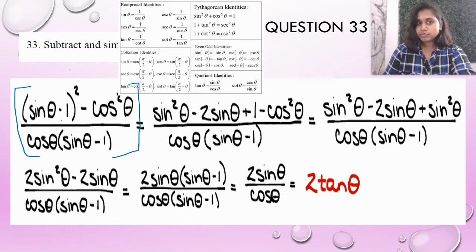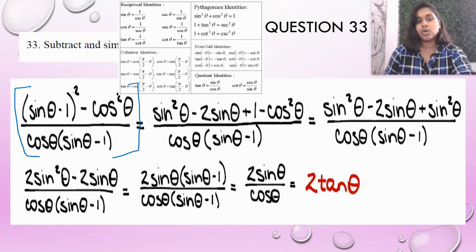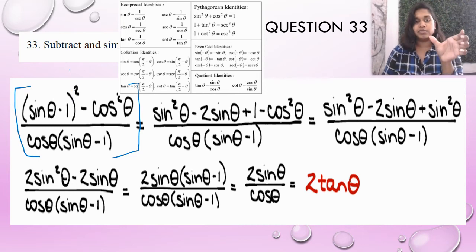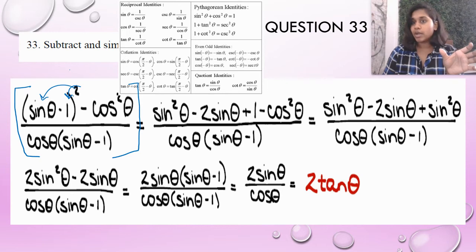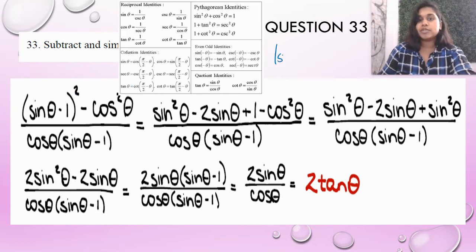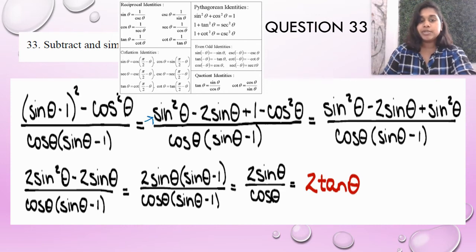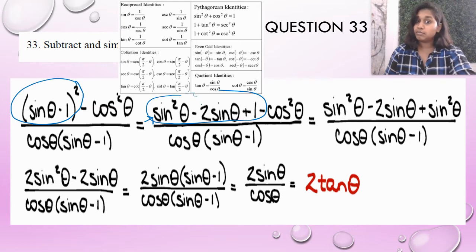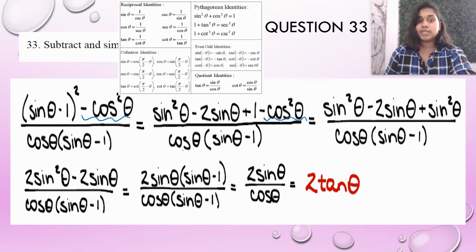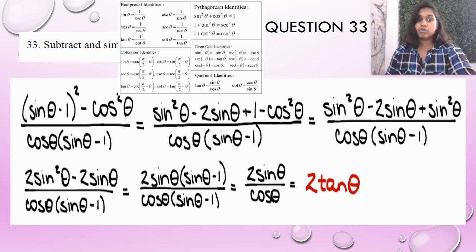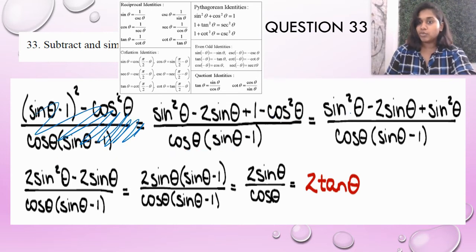We've subtracted. Now I know that sine minus one squared can actually be further simplified. I cannot just bring those squares over. I have to do this: sine theta minus one times sine theta minus one. I'm going to FOIL those out. So I end up with sine squared theta minus 2 sine theta plus one.